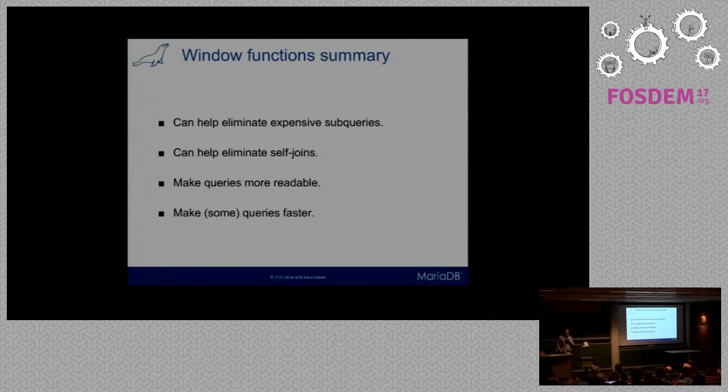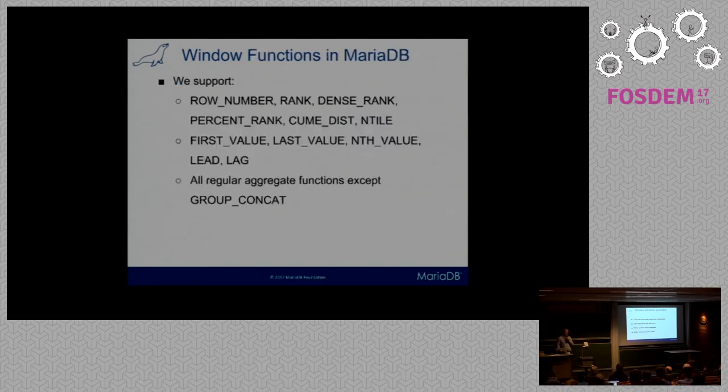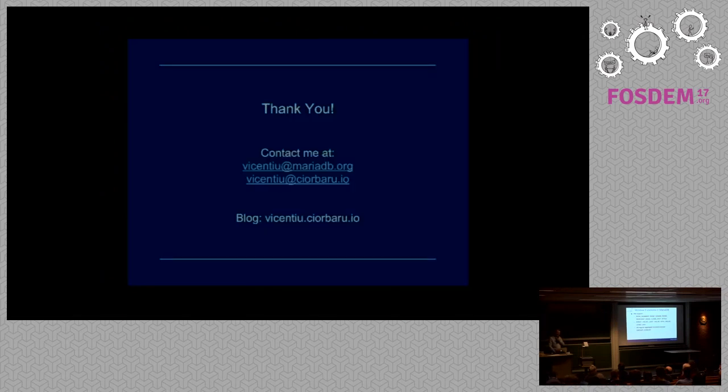In summary, window functions help you eliminate self-joins, like we've seen with both examples. At the same time, they make queries more readable - no more duplicating of sub-queries everywhere. And in most use cases that you will find with window functions, they will speed up your computation as opposed to using regular SQL. Here's a set of functions we do support. This is almost an exhaustive list of what the standard suggests. We do have a few exceptions, but these are most of them.